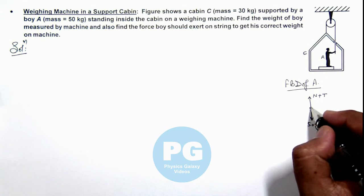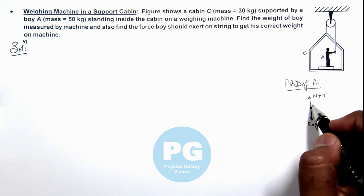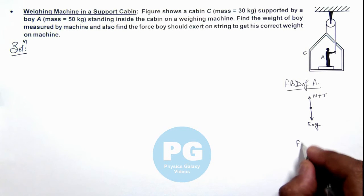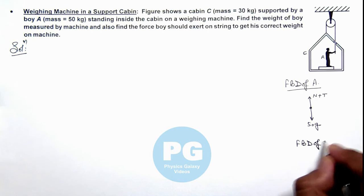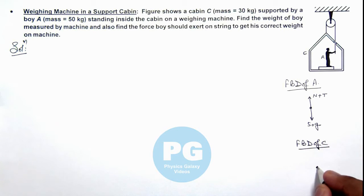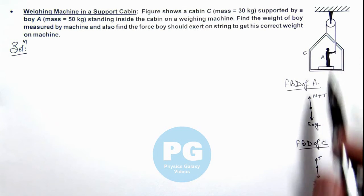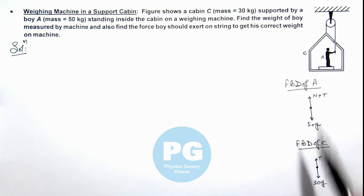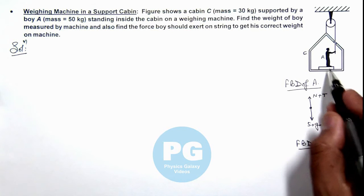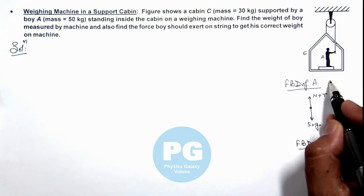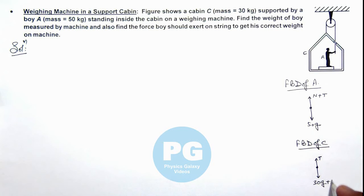In this situation, if we consider boy A is in equilibrium, we can write its equation by balancing the forces. Similarly, if we draw the free body diagram of cabin C, in the downward direction its weight is 30g. Tension is acting in the upward direction due to the string connected at the top supporting the cabin. The weighing machine attached to the cabin will be experiencing a normal reaction in the downward direction.